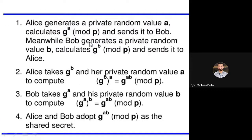You assume some private number A, calculate G^A mod P, and send this to Bob. Bob should also generate some random value B, calculate similarly with respect to that, and send it back to Alice. Now both parts are public.